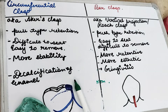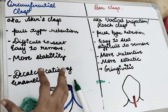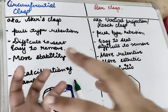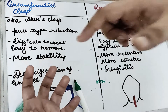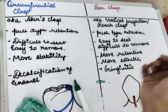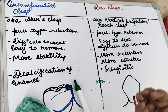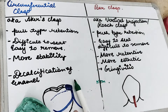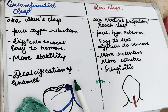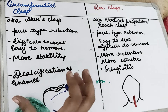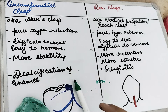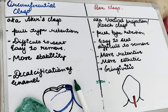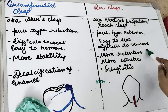The circumferential clasp, also known as the akers clasp, approaches the undercut starting from the occlusal surface, and the retentive arm goes into the undercut in the gingival part. On the other hand, a bar clasp approaches the undercut from the gingiva. So a circumferential clasp gives a pull type of retention, and a bar clasp provides a push type of retention because it is difficult to remove.